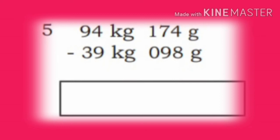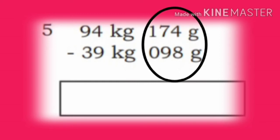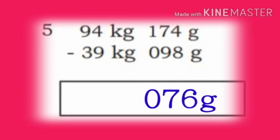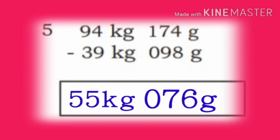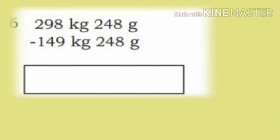Fifth problem: 94 kg 174 g minus 39 kg 98 g. First subtract grams: 174 minus 98 equals 76 grams. Now subtract kilograms: 94 minus 39 equals 55. So the answer is 55 kg 76 grams.